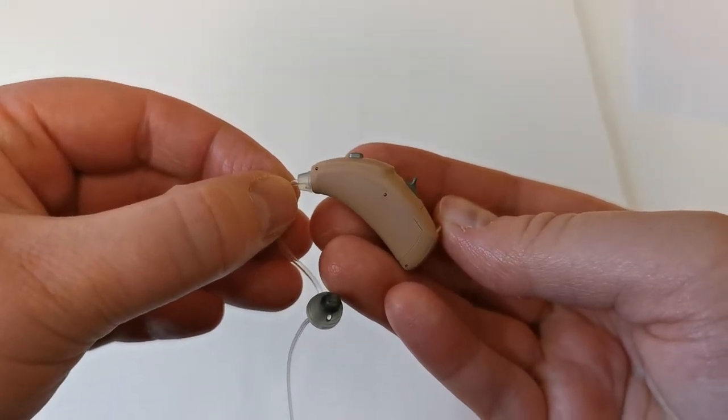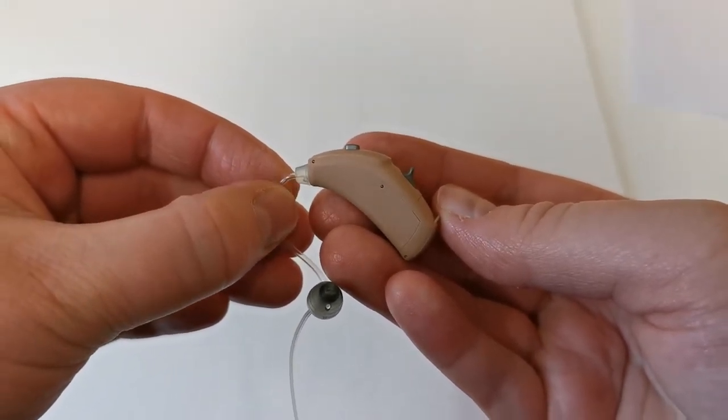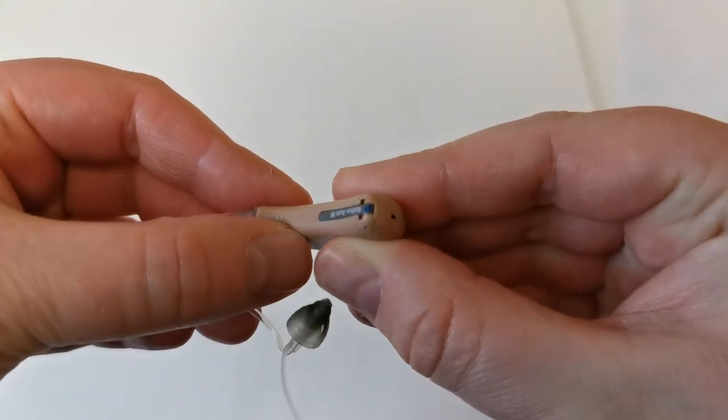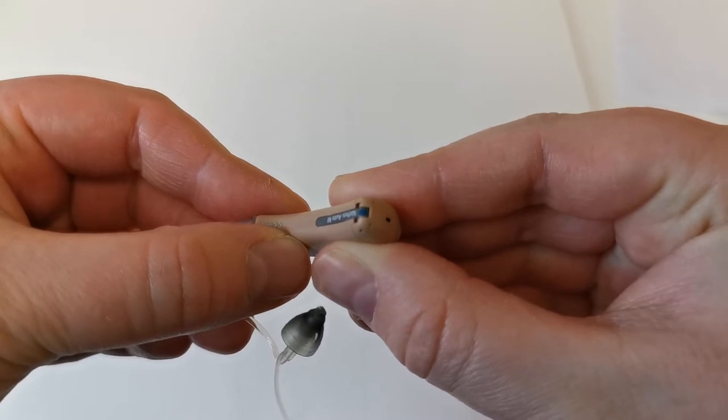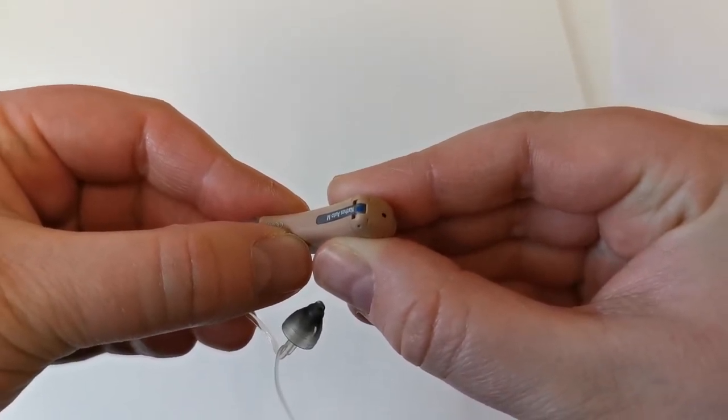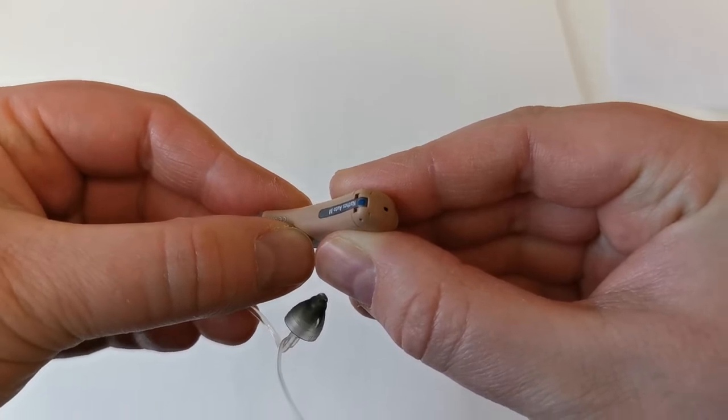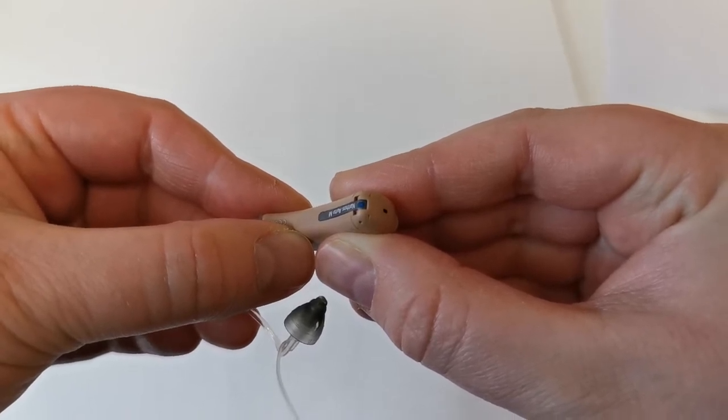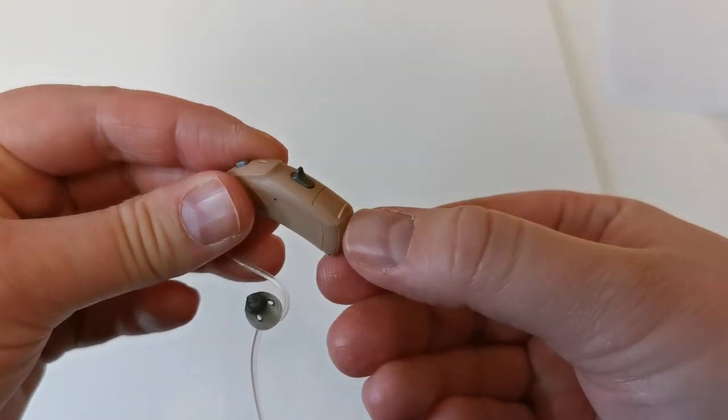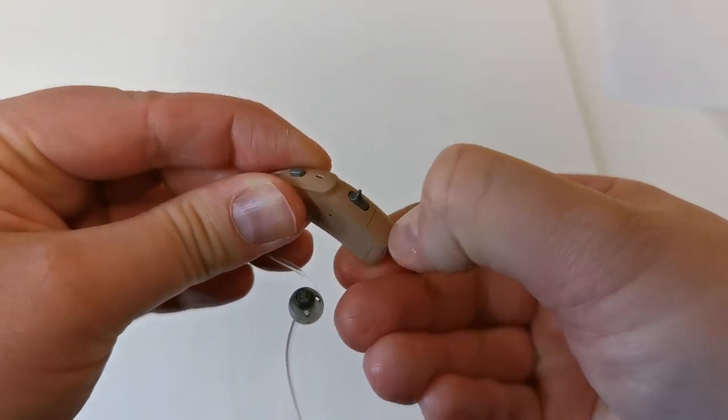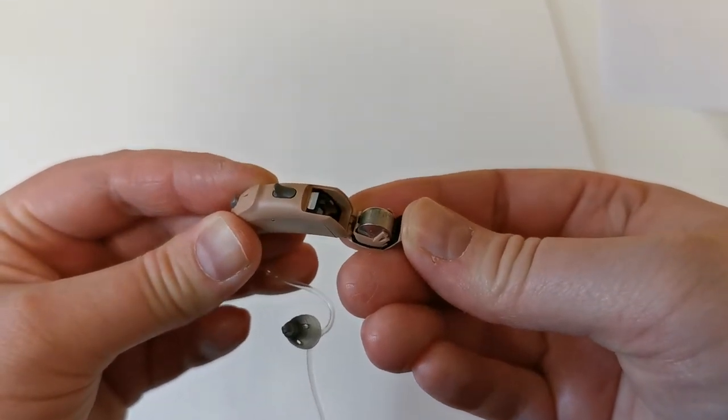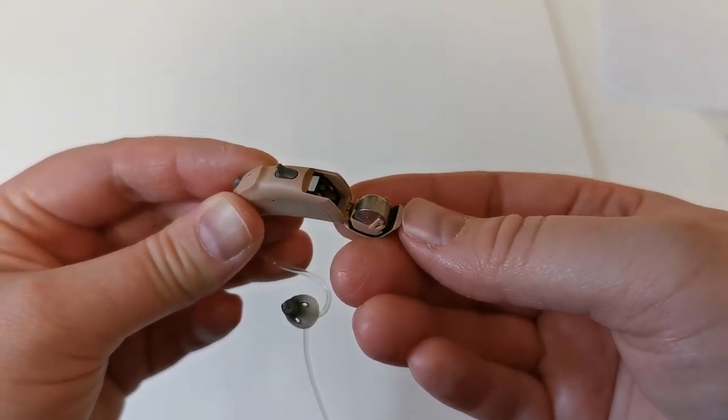In this video we will show you around the hearing aid. At the bottom of the hearing aid there is a left or right marker. The left-sided hearing aid has a blue marker and the right-sided hearing aid has a red marker. The lip at the bottom of the hearing aid is for opening the battery drawer.